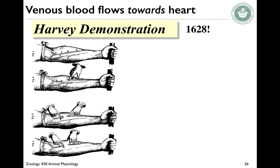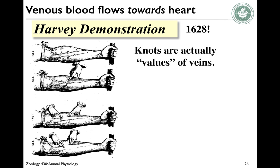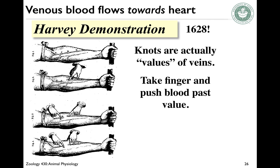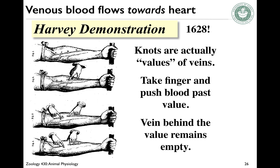This was demonstrated back in 1628 in what's called the Harvey demonstration. They tied a tourniquet, identified these knots they called 'values' — which are actually where the valves are in the veins — and pushed blood with their finger past the valve. They noticed that the vein remains empty behind the valve, showing that blood only flows in one direction.